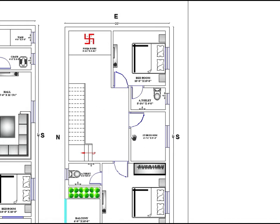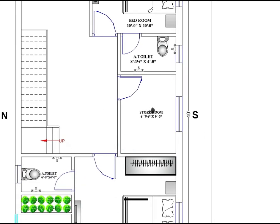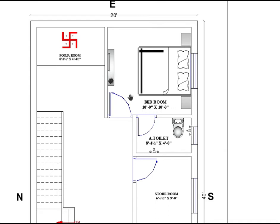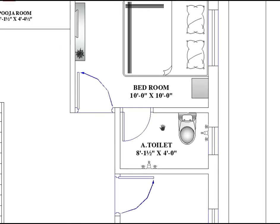Here is the storage area and another bedroom, which is the same size as the ground floor bedroom — 10 feet by 10 feet. There is an attached toilet which is 8 feet 1 inch by 4 feet — horizontally 8 feet 1 inch and vertically 4 feet.